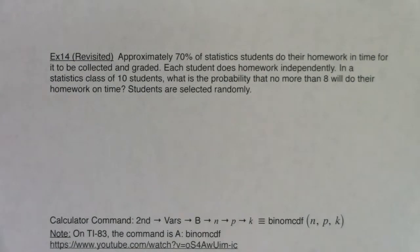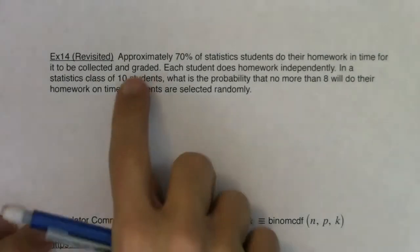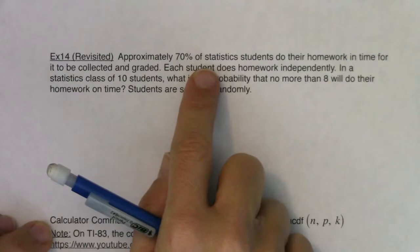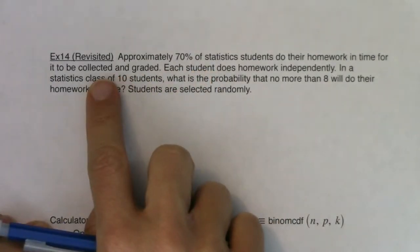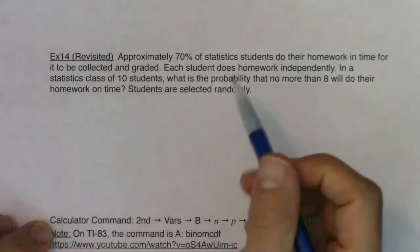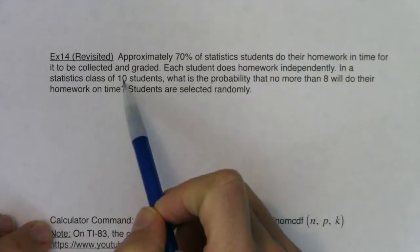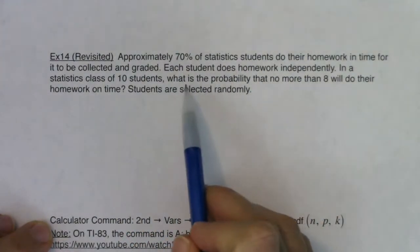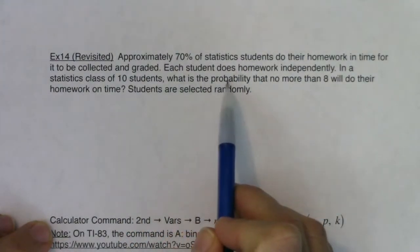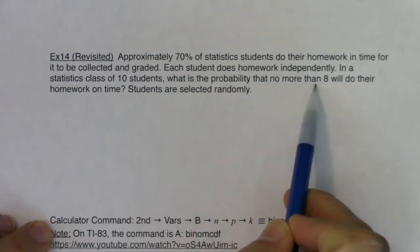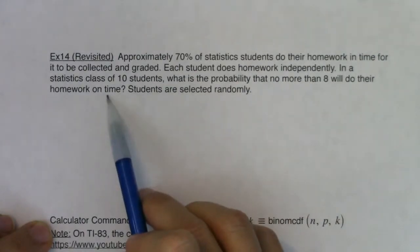Okay, we're back continuing with Example 14, but we're going to change the setup of the question a little bit. We still have 70% of stats students doing their homework on time, each student doing their homework independently, a stats class of 10 students — but now the question is: what is the probability that no more than eight will do their homework on time?